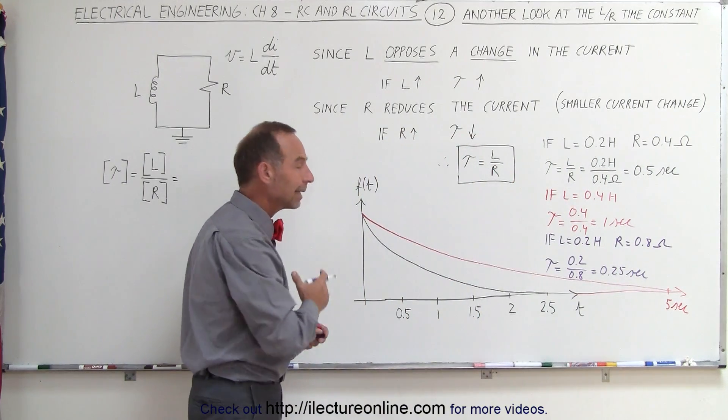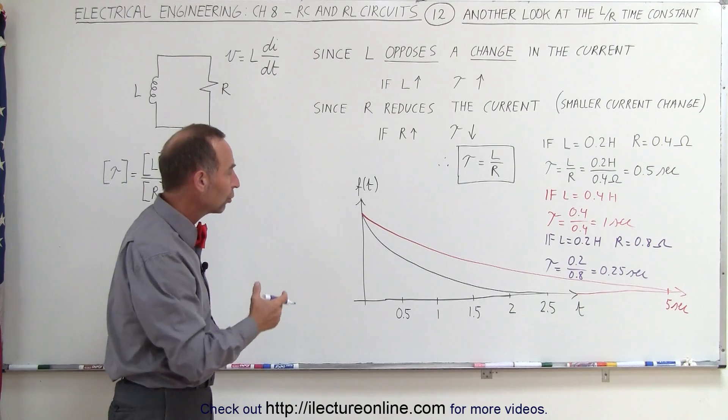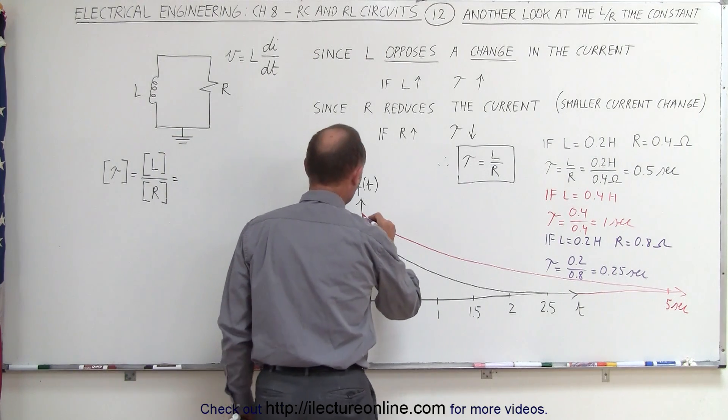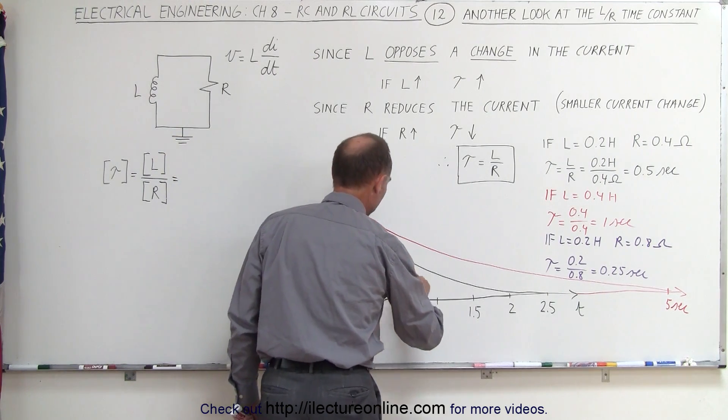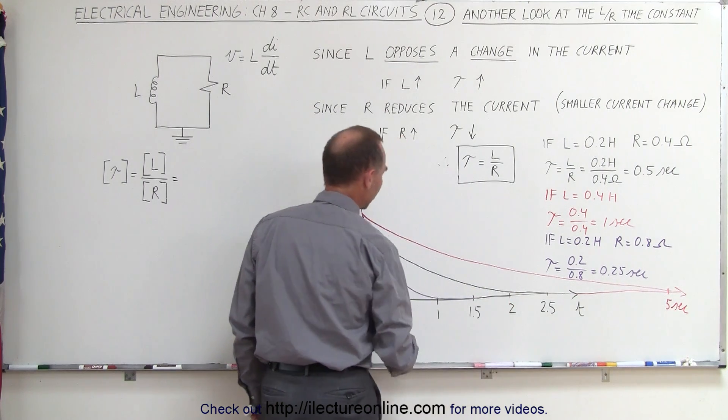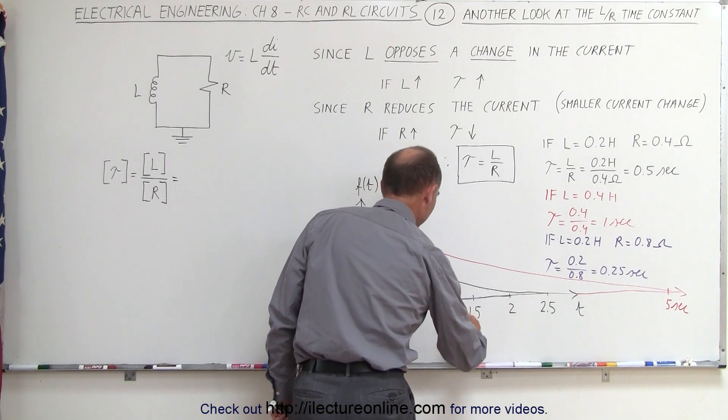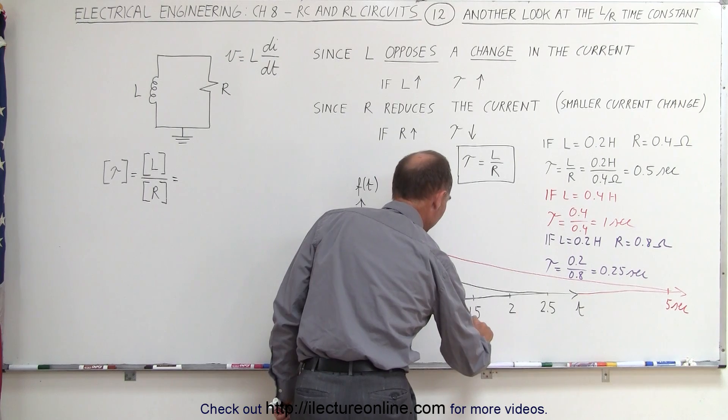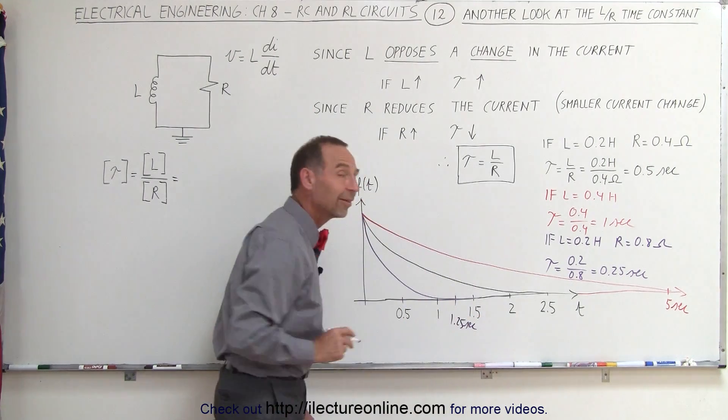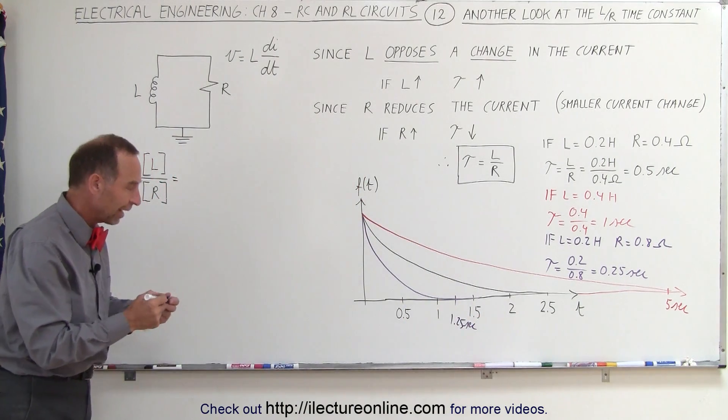And you can see that the time constants will be reduced, and that way the decay of the current, or the decay of the voltage, will be much faster, and the decay curve will look something like this, in such a way that after 1.25 seconds, we'll be within 1% of the final value of the current.